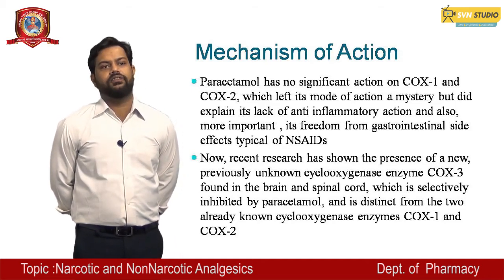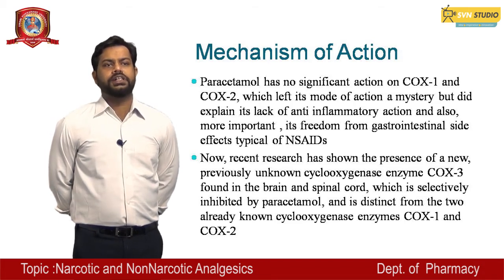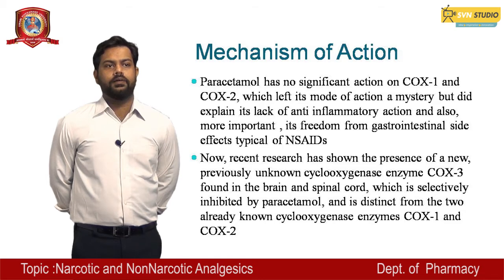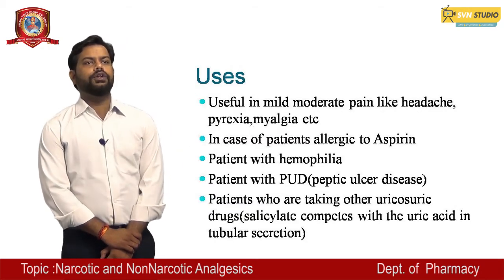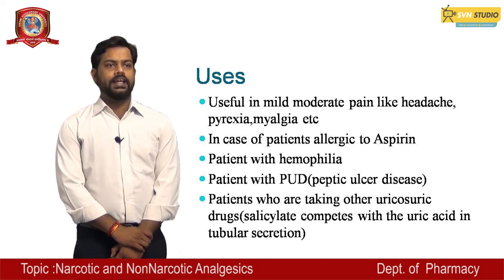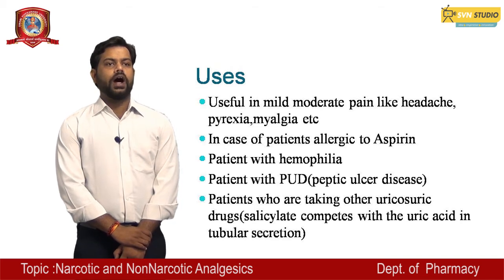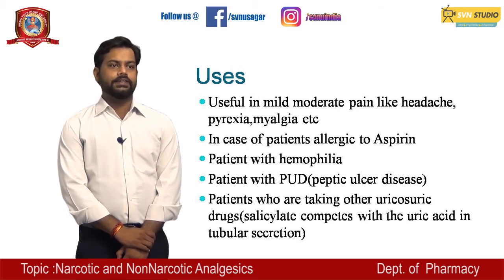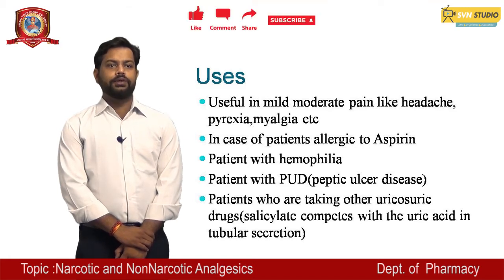COX-1 and COX-2 are the known enzymes. The new research has shown that there is another enzyme, COX-3, found in the spinal cord and the brain, which relates to paracetamol's action. Acetaminophen is useful in mild to moderate pain like headache, pyrexia, and myalgia. It is also given to patients allergic to aspirin, patients with hemophilia, patients with peptic ulcer disease (PUD), and patients taking uricosuric drugs, as salicylates compete with uric acid in tubular secretion.